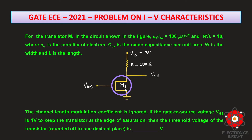The problem states that for transistor M1 in the circuit shown, μnCox is 100 microamps per volt squared and the W/L ratio is 10, where μn is the electron mobility, Cox is the oxide capacitance per unit area, W is the width, and L is the length. The channel length modulation coefficient is ignored, which is why this is treated as a long-channel transistor where short-channel effects, especially channel length modulation, are completely ignored.